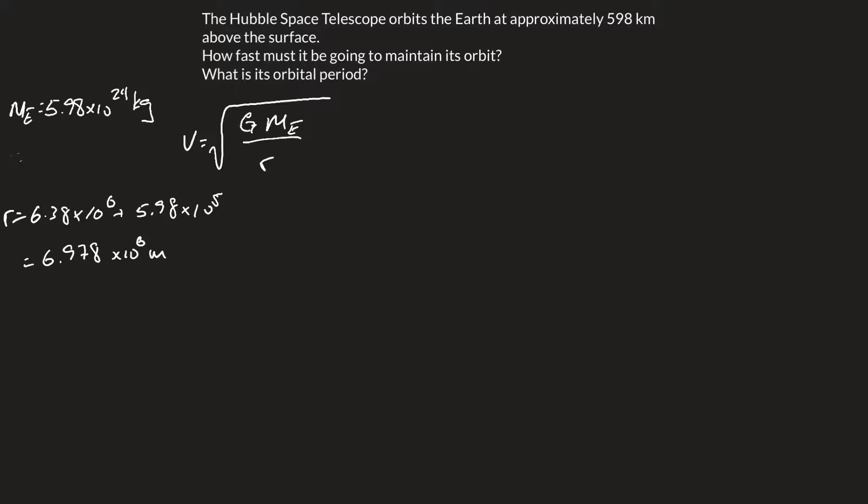To solve for the velocity, we have the square root: our value for g, 6.67 times 10 to the negative 11; the mass of the Earth, 5.98 times 10 to the 24; and our distance from the center of the Earth to where the satellite actually orbits, 6.978 times 10 to the 6 meters.